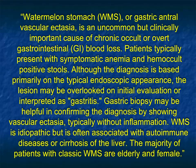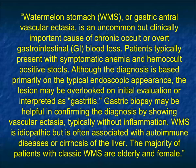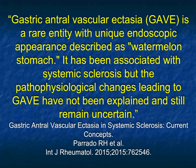Here's an article: watermelon stomach or gastric antral vascular ectasia is an uncommon but clinically important cause of chronic occult or overt GI blood loss. A very unusual diagnosis, but something to be aware of.